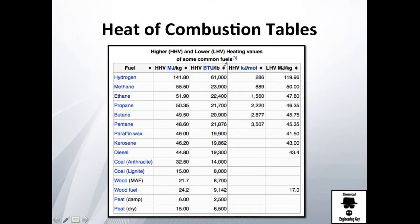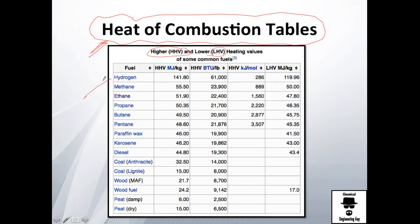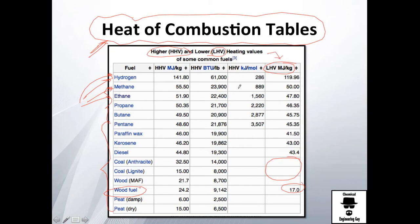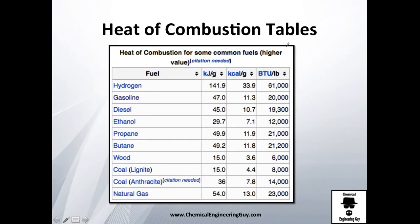You can calculate heating values using heats of formation and reactions, but there are many data tables available where you can look up higher and lower heating values directly for common fuels. For example, hydrogen, methane, kerosene, diesel, and coal are all listed. Note that coal doesn't have a lower heating value listed, whereas wood fuel does — because wood contains moisture.